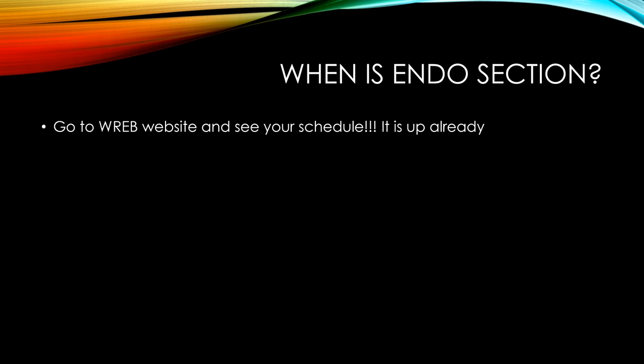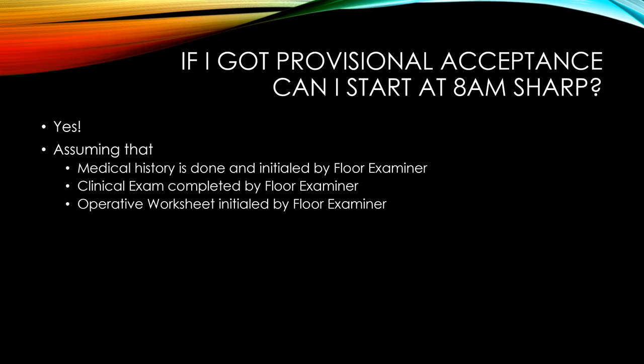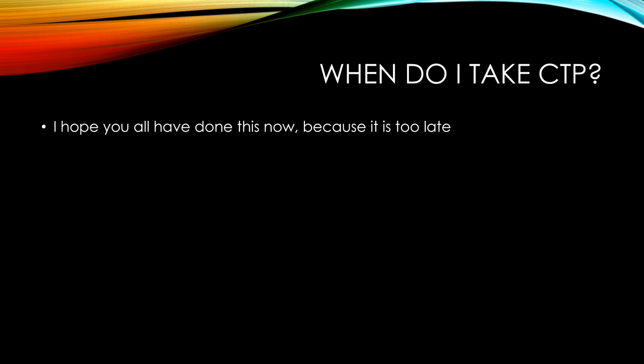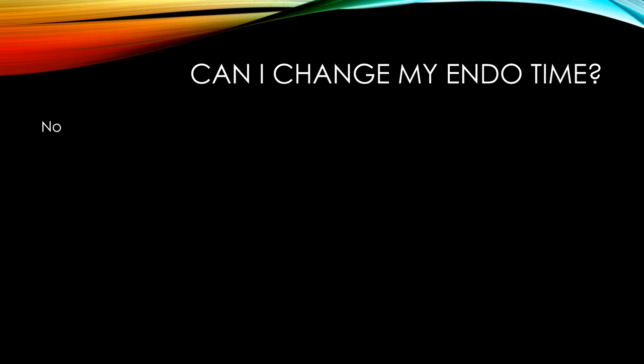When is the endo section? Go to your REBS website to see exactly which three hours are allocated to you — those are the only three hours you will have. If you got provisional acceptance, can you start at 8 a.m. sharp? Yes — assuming the medical history is initialed by a floor examiner, the clinical exam is completed by a floor examiner, and the operative worksheet is initialed by a floor examiner. The CTP deadline has already passed for this cycle; if you haven't done it, contact REBS. Can you change your endo time? No — those are the only three hours you have for the whole weekend, unless you fail and retake on Monday.